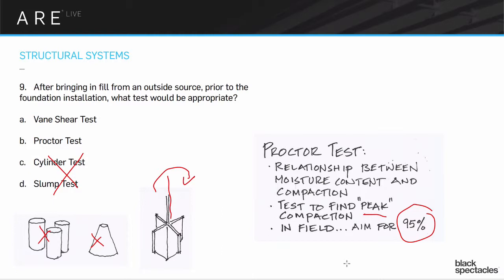There's factors of safety built in and all sorts of other ways. So proctor test is this thing that's figuring out about compaction it's related to the moisture content but you're looking for what the peak compaction capacity is because you want to get it compacted so that nothing moves later and in the field you'll usually find that you're aiming for 95% of that peak.